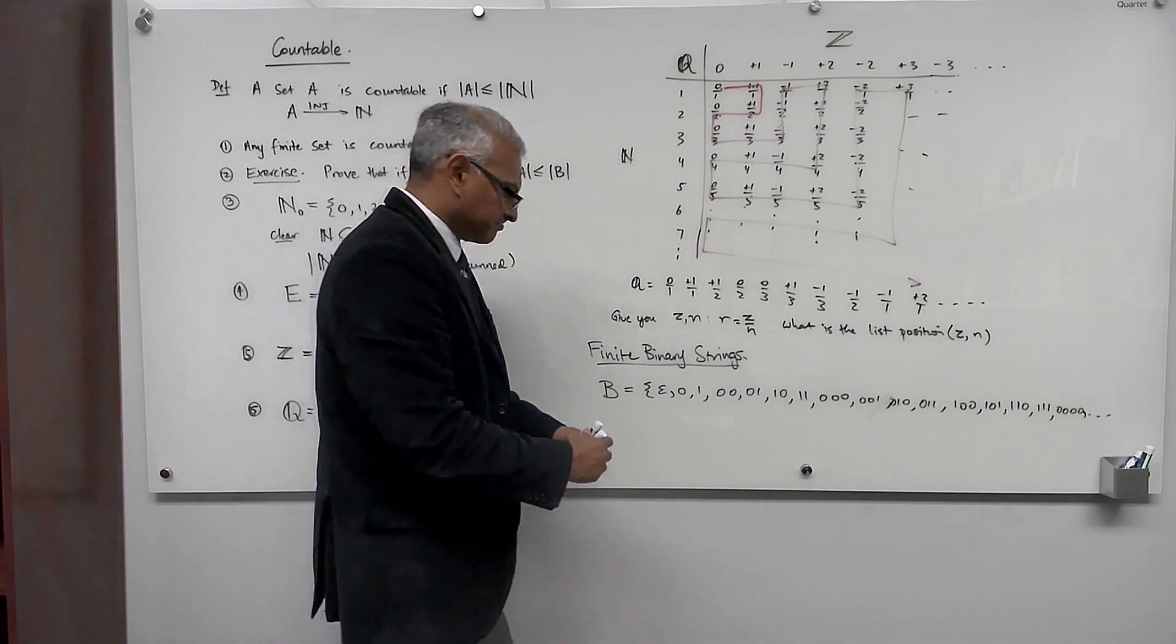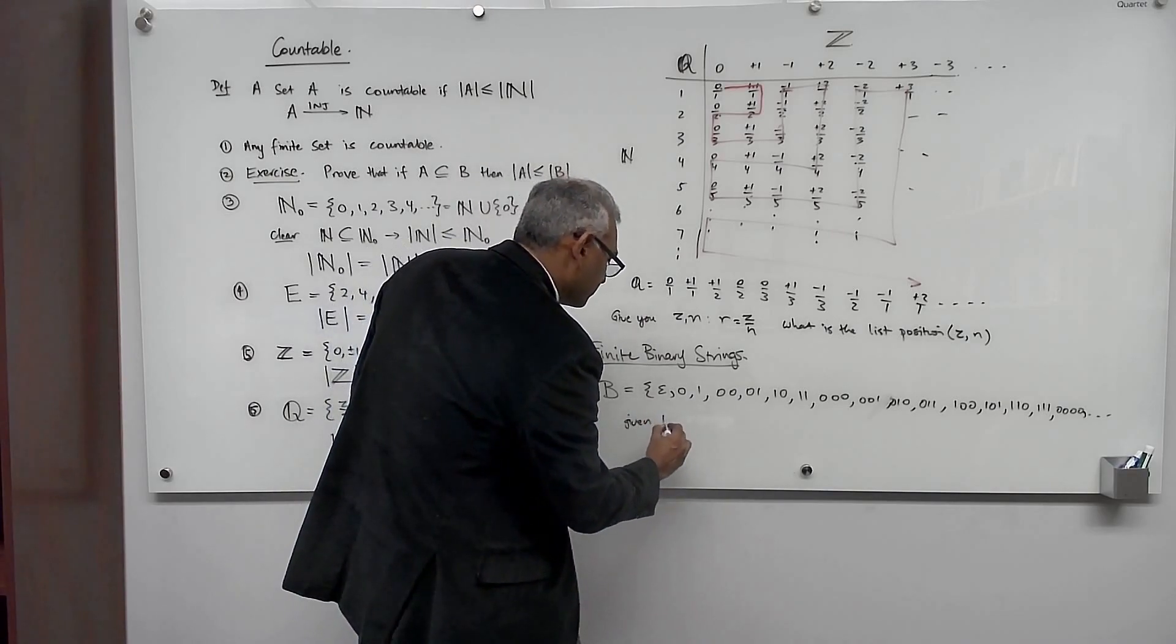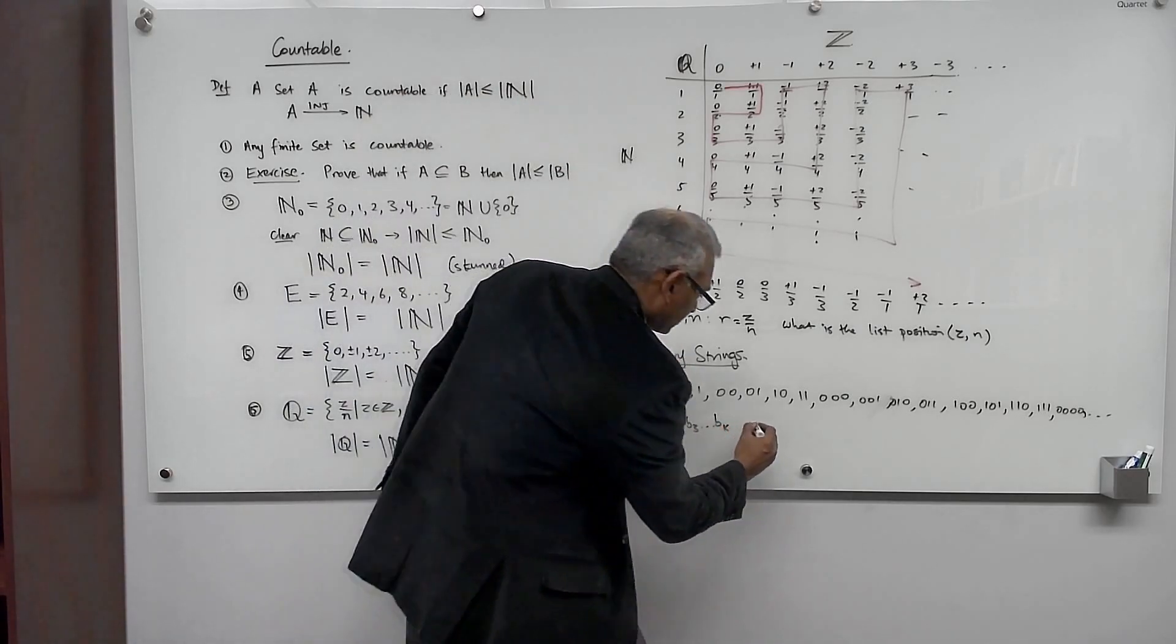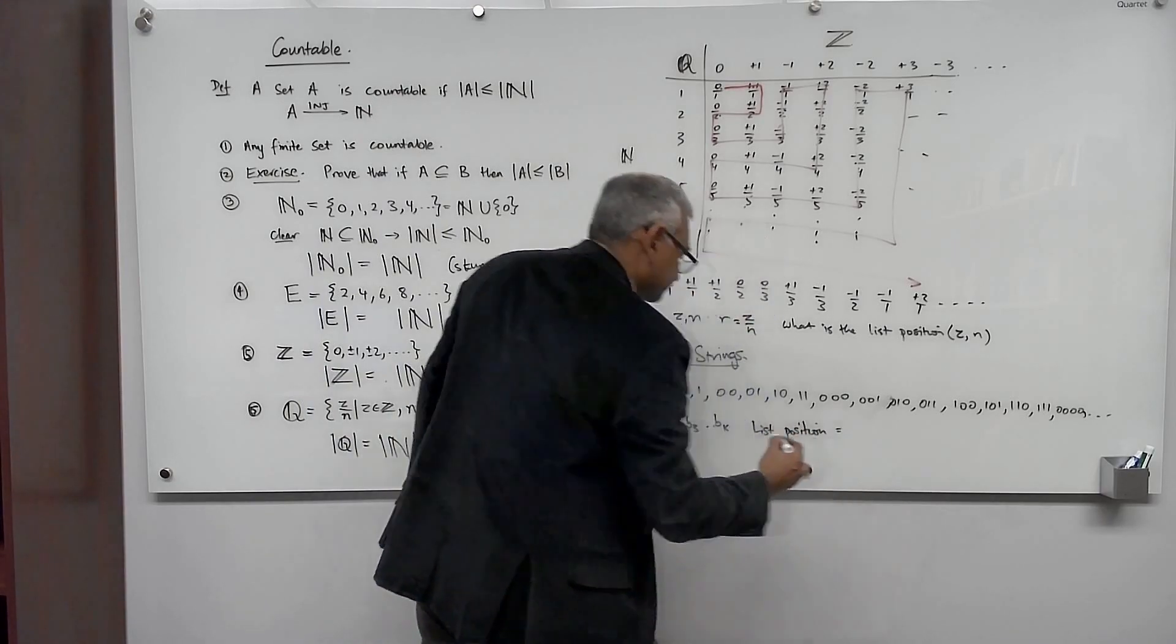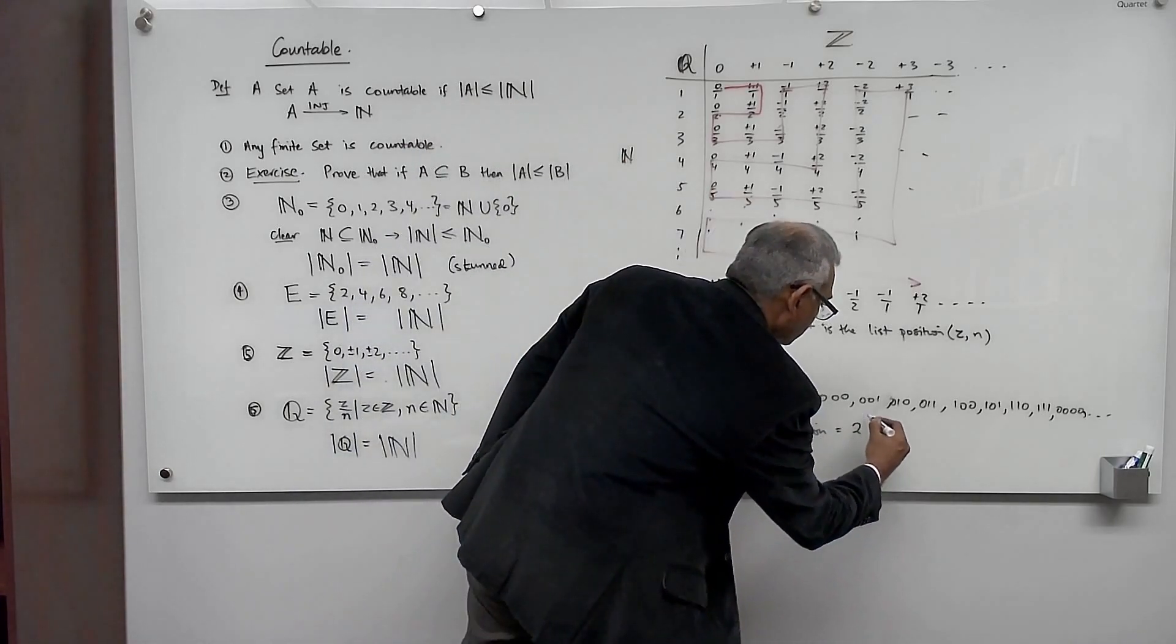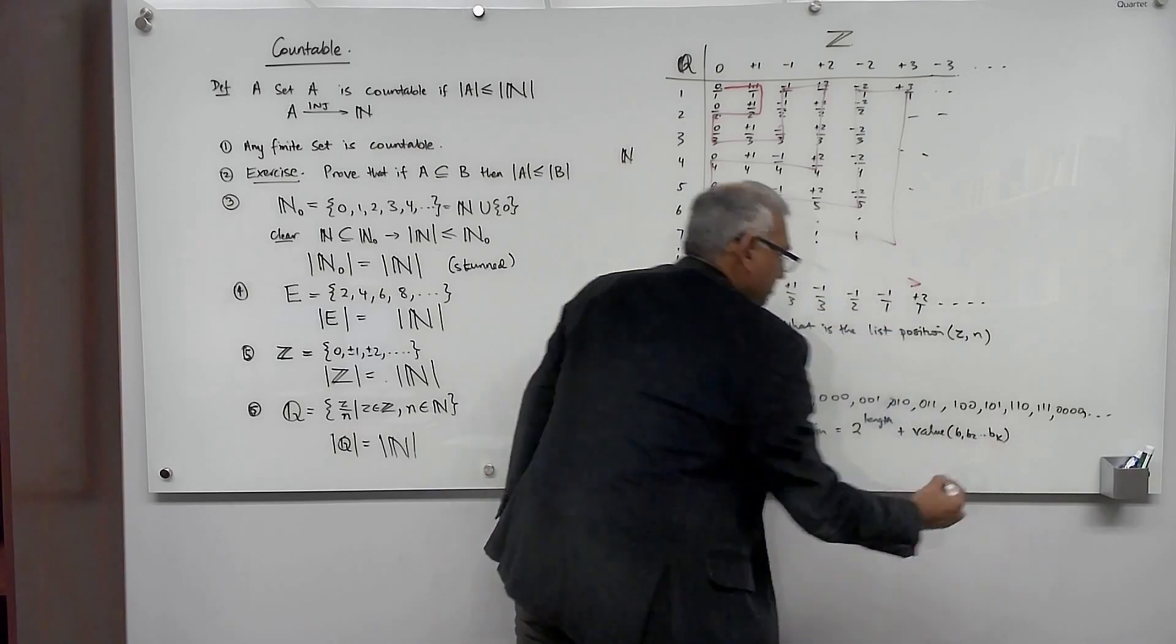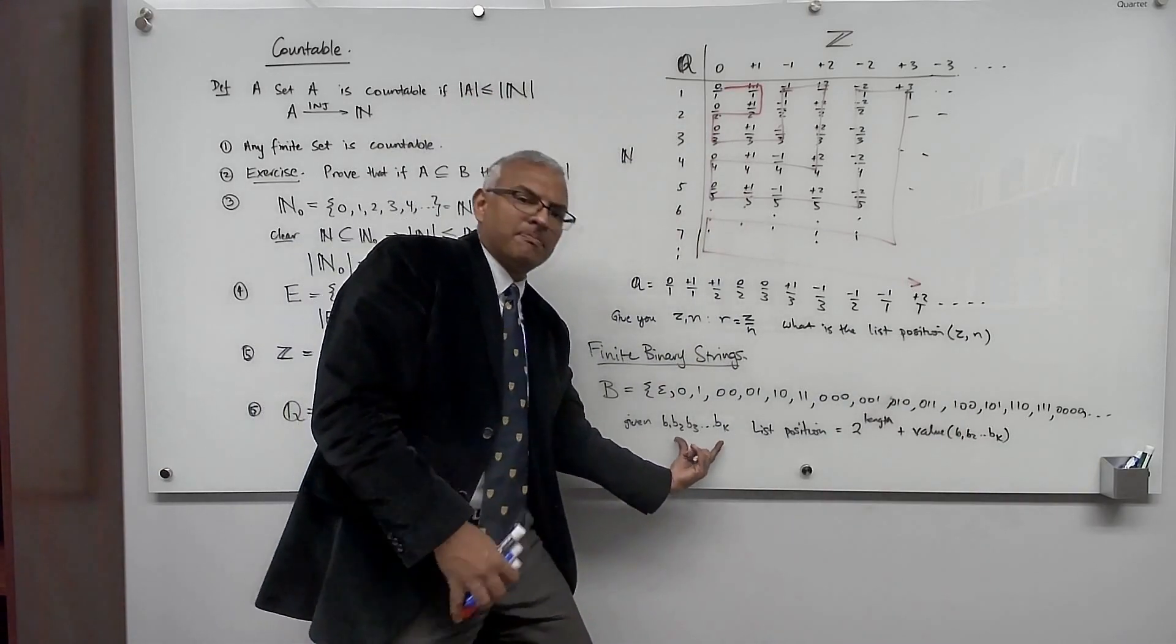So interesting challenge. Given a binary string b1 b2 b3 up to bk, we can compute its value in the standard binary way. Show that the list position is equal to 2 to the length of the string, 2 to the length plus the value of b1 b2 up to bk. So I'm claiming that this is a formula for the list position of any given binary string.